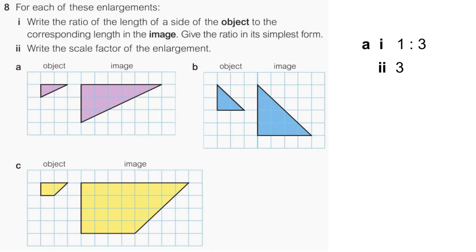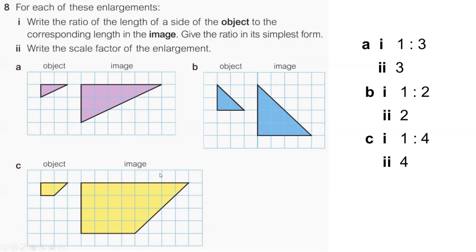Pause the video and have a go at B and C if you hadn't already. Be careful — for B, if you left it as two to four, remember you have to simplify, so that would become one to two. With C, hopefully that one wasn't too much of an issue because there was a side length of one that becomes a side length of four. But if you did two to eight, remember to simplify it to one to four. Those should have been the scale factors you got.